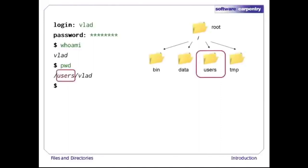We know that our current working directory, /users/vlad, is stored inside /users, because /users is the first part of its name. Similarly, we know that /users is stored inside the root directory /, because its name begins with slash.